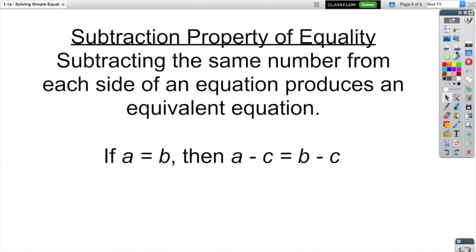The same thing goes for subtraction. The subtraction property of equality is that when subtracting the same number from each side of an equation produces an equivalent equation. So once again, if I start off with a balanced scale that has A equal to B, then A minus C should still be equal to B minus C.